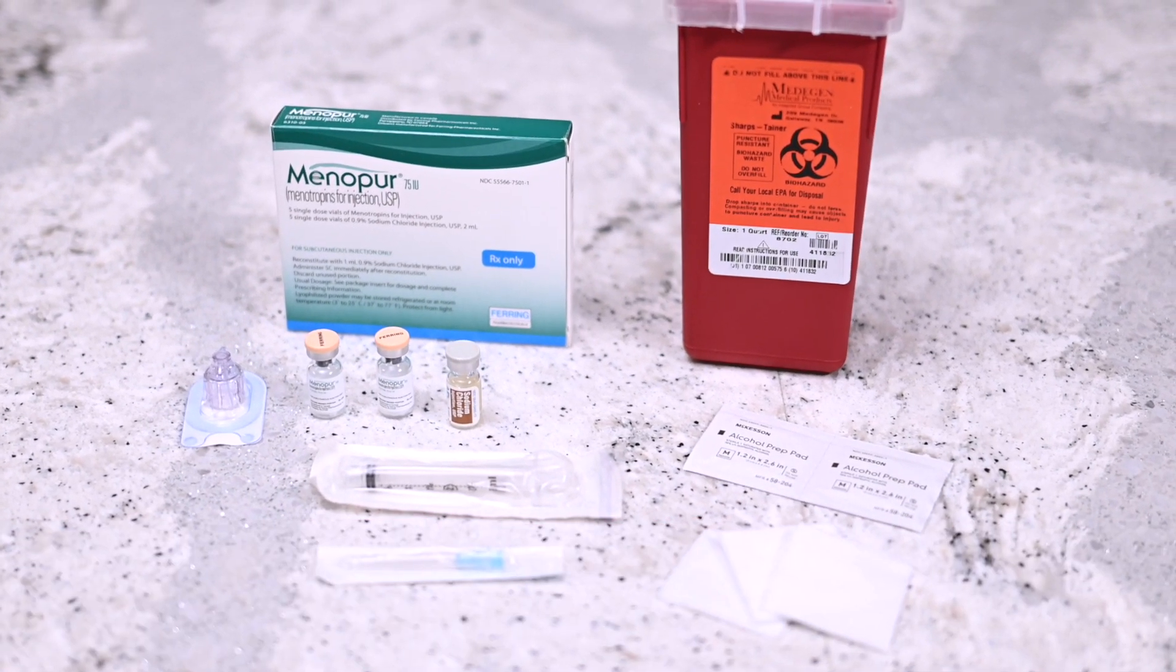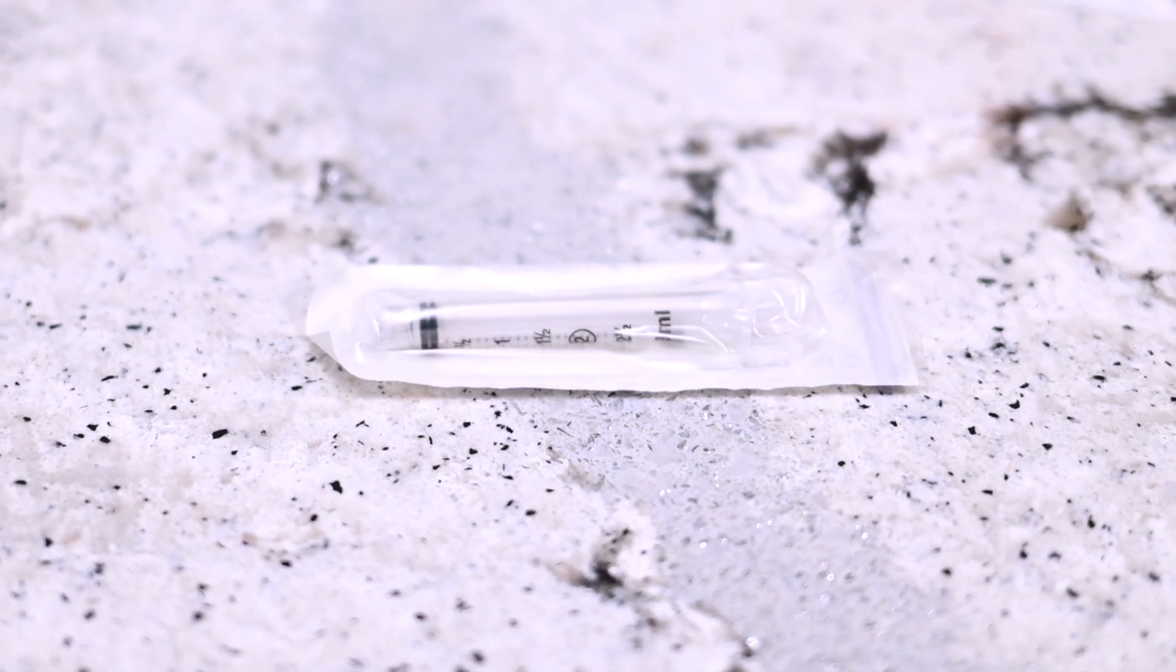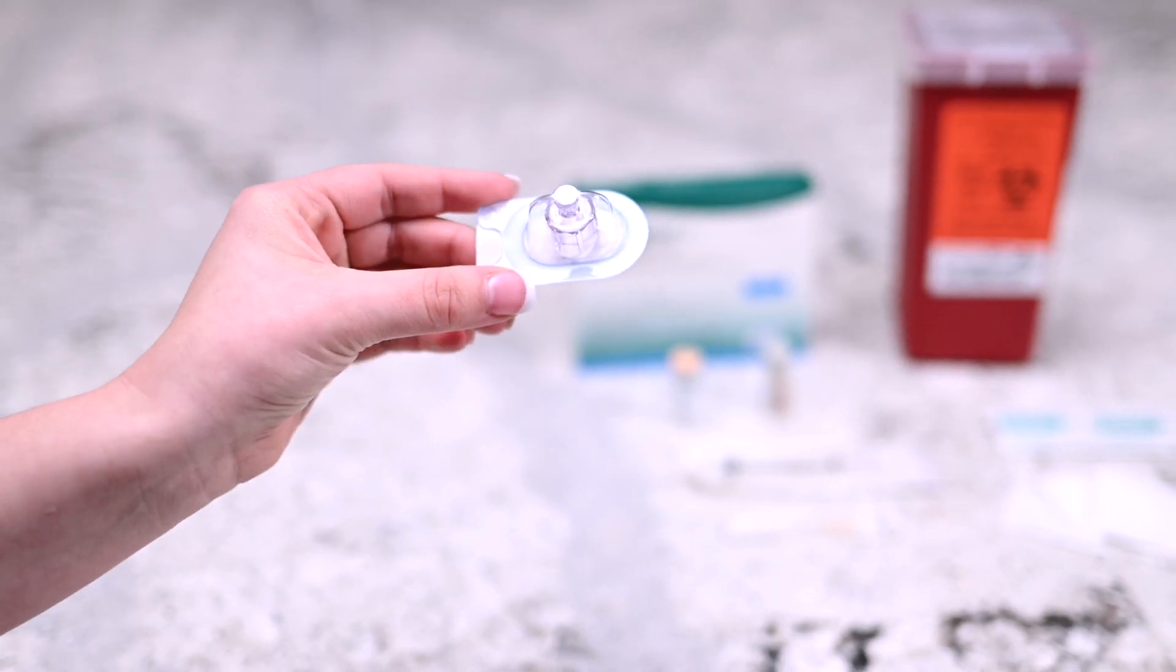You will need the following: two vials of Menopur powder, one vial of sterile diluent, syringe, needle, q-cap, alcohol prep wipe, gauze, and sharps container.